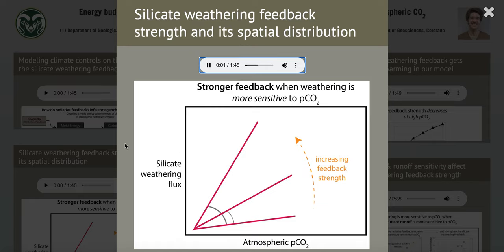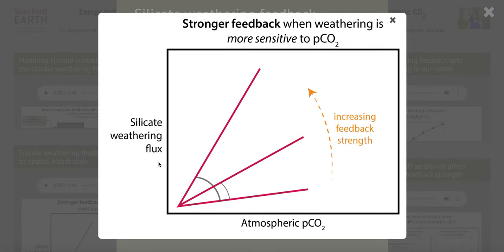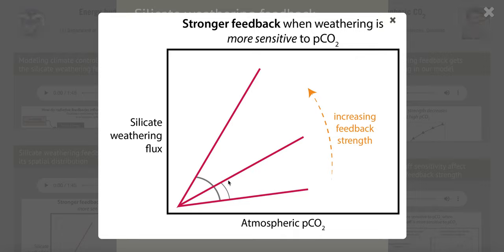The strength of the silicate weathering feedback is basically how sensitive silicate weathering fluxes are to a change in CO2. In this conceptual diagram on the top, when silicate weathering fluxes change a lot for a given change in CO2, that can be interpreted as a stronger silicate weathering feedback — one of the steeper lines on this plot. If the silicate weathering fluxes don't change as much, that's a weaker feedback. When data points are steeper in these plots, that's a stronger feedback; when they're shallower, that's a weaker feedback.